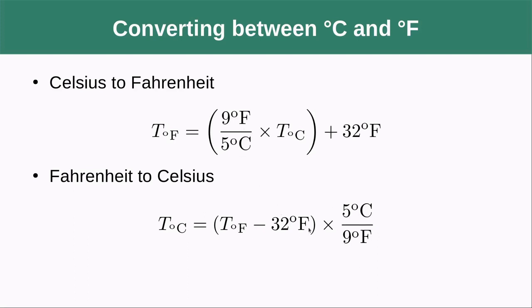You can see how all these units are going to play out. This is going to be in degrees Celsius. After you multiply it by this, you're going to cancel the Celsius, you're going to be in degrees Fahrenheit, and then you're going to add degrees Fahrenheit to it. Your final answer will be in degrees Fahrenheit.